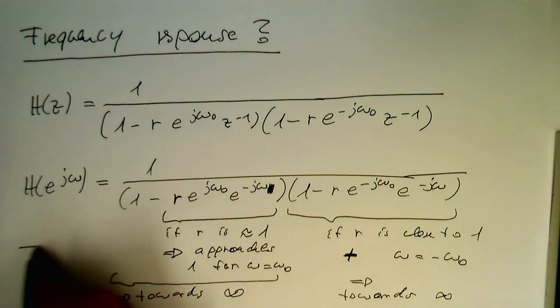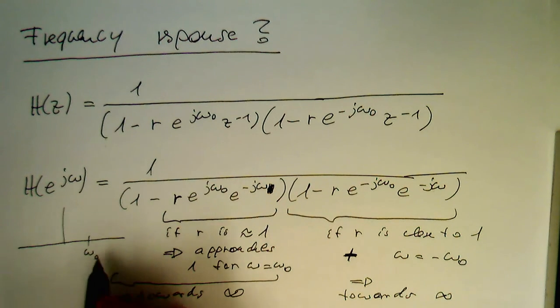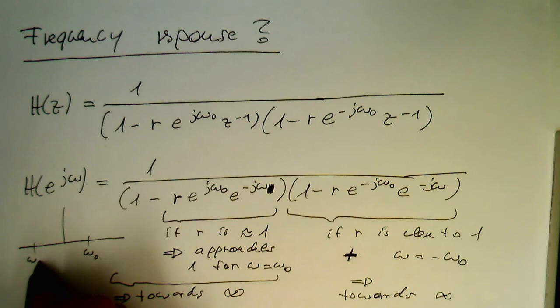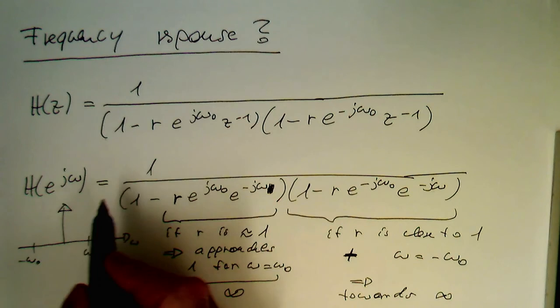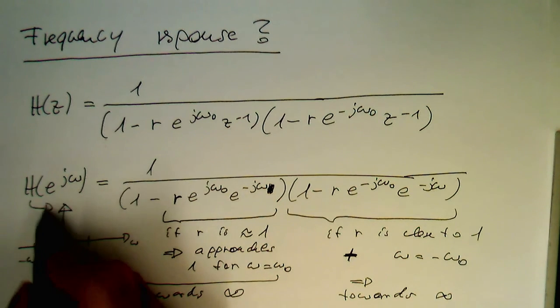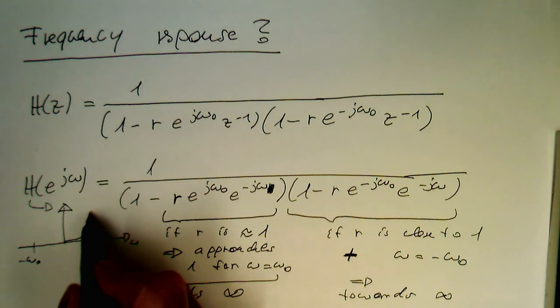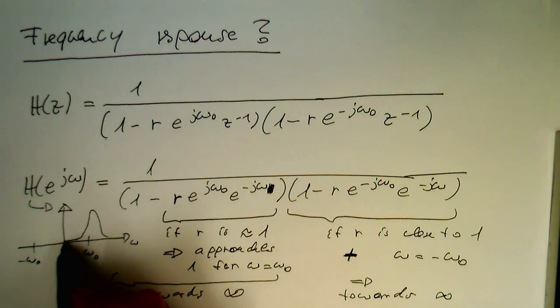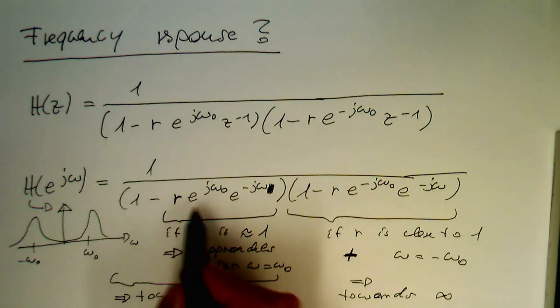So if you plot this here, in our frequency spectrum, that's our omega 0, that's our minus omega 0, this is omega. And this is here our function h of e to j omega. Then what we get is here some kind of peak, and this is obviously dependent on the r-factor here.